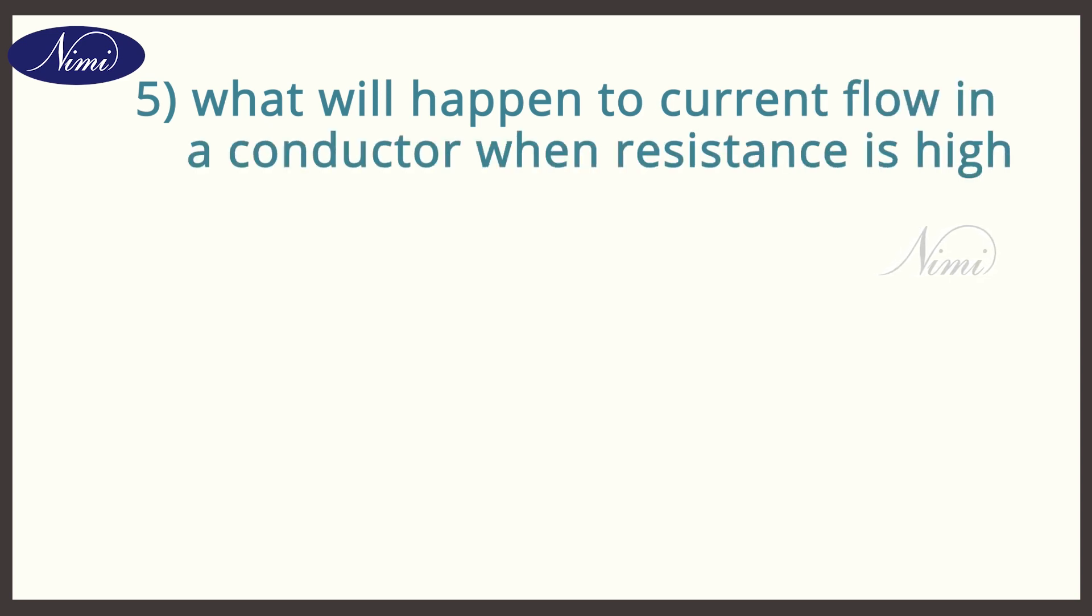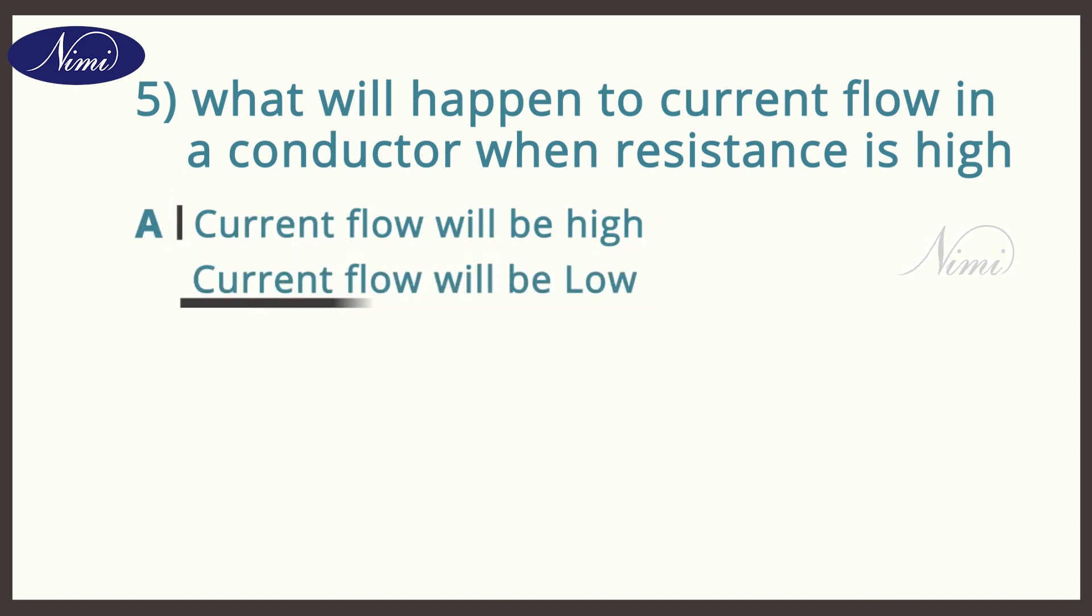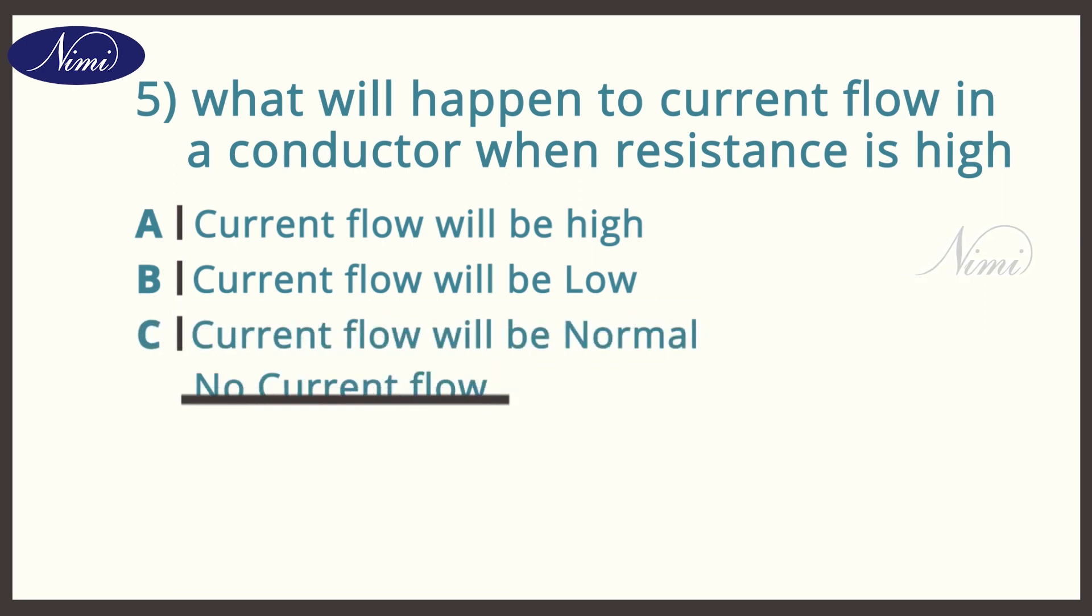Question number 5. What will happen to current flow in a conductor when resistance is high? Options are A. Current flow will be high. Option B. Current flow will be low. Option C. Current flow will be normal. Option D. No current flow.